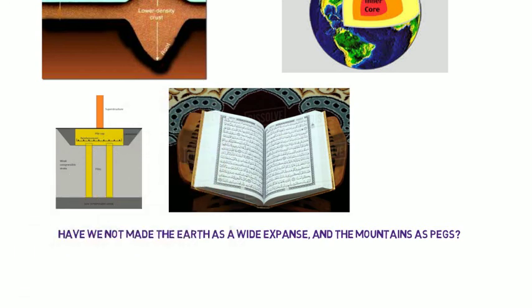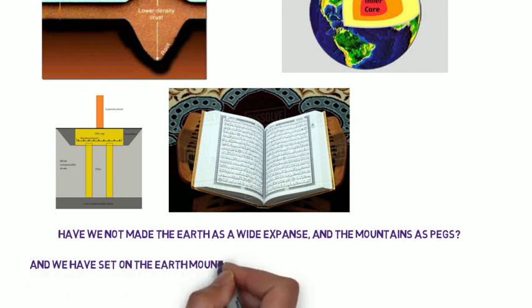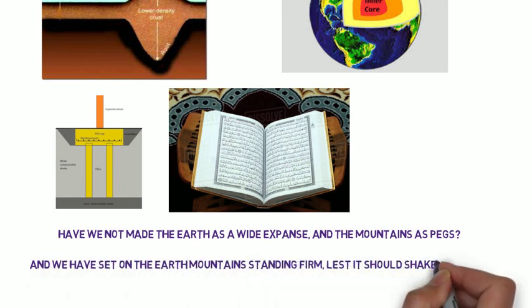Another Quran verse clearly mentions the function of the mountains in stabilizing the Earth's crust. Chapter 21, Verse 31: And we have set on the Earth mountains standing firm, lest it should shake with them.